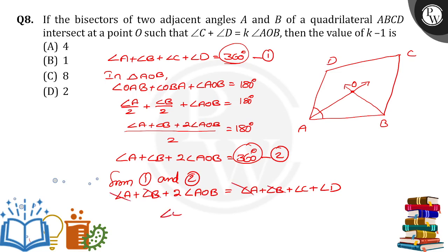If I compare with the given condition k times angle AOB, then we will get k equals 2, so k minus 1 equals 2 minus 1, that is 1. Option B, 1 is the right answer. Thank you.